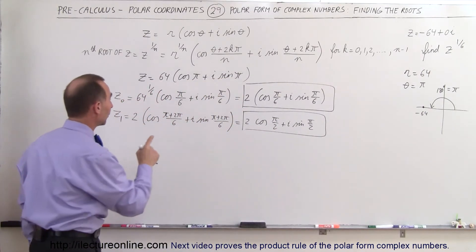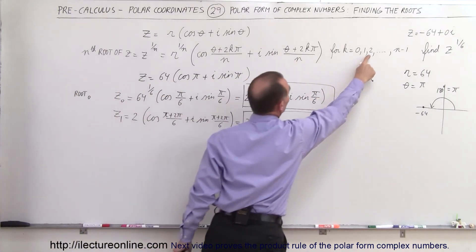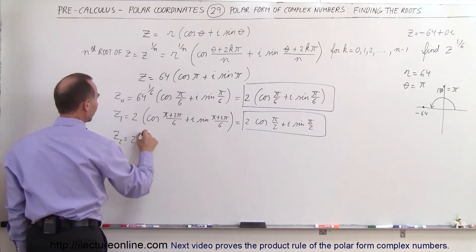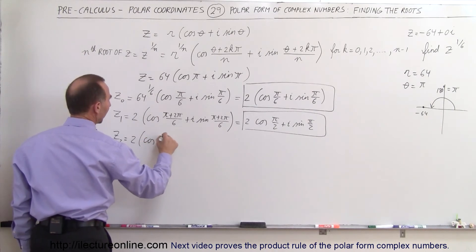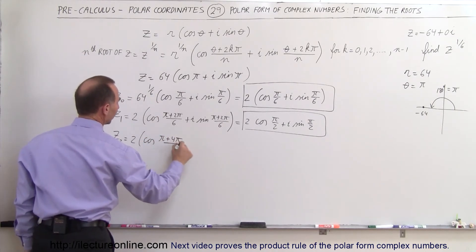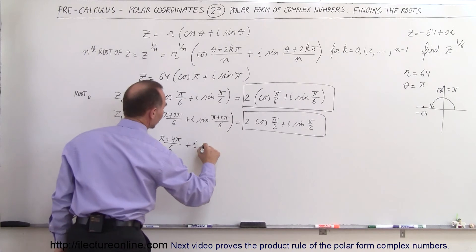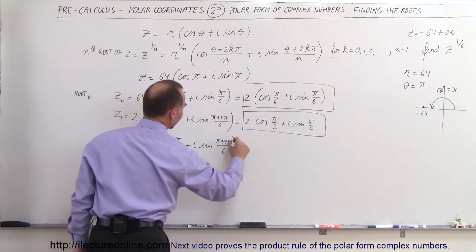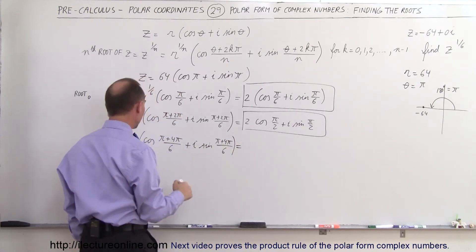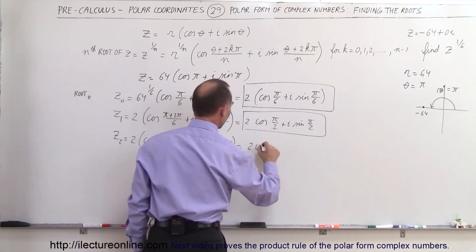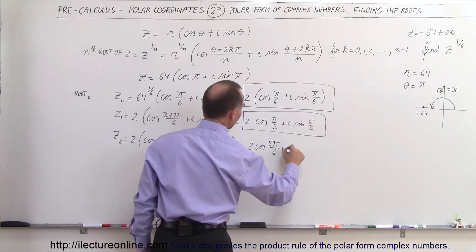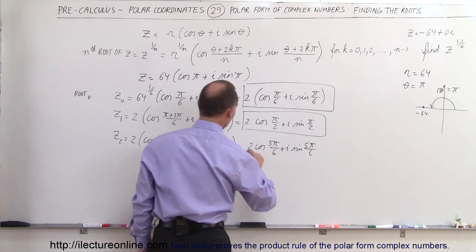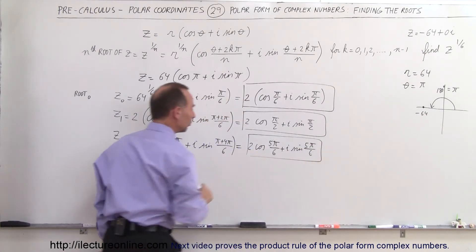Now letting k equal 2, z sub 2 equals 2 times the cosine of pi plus 4 pi divided by 6, plus i times the sine of pi plus 4 pi divided by 6. That gives us 5 pi over 6. So z sub 2 equals 2 times the cosine of 5 pi over 6, plus i times the sine of 5 pi over 6.